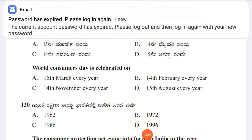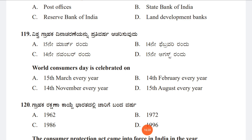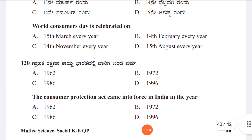Question 119: World Consumer Day is celebrated on Option A: 15th March every year, Option B: 14th February every year, Option C: 14th November every year, Option D: 15th August every year. The answer is Option A, 15th March every year.